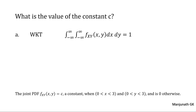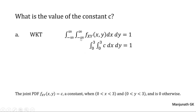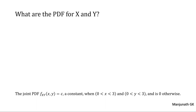The first question: calculate the value of C. It can be calculated using the property that the volume under the curve of a bivariate PDF equals 1 when limits vary from minus infinity to infinity — that is the third property of a bivariate PDF. Here X and Y vary from 0 to 3, so the limits become 0 to 3. C is a constant; integration of dx from 0 to 3 is 3, integration of dy from 0 to 3 is 3, so 3 × 3 = 9, giving C = 1/9.